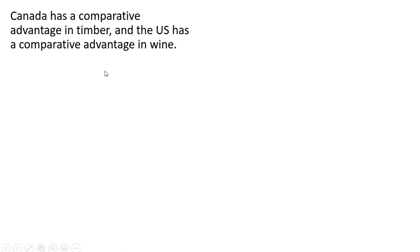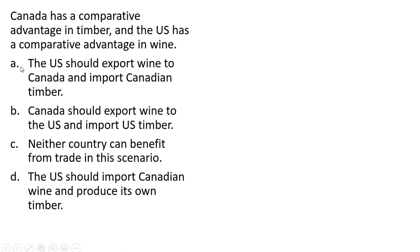Canada has a comparative advantage in timber and the US has a comparative advantage in wine. The correct answer choice is A: you should export the good you have a comparative advantage in. So the US has a comparative advantage in wine and should export wine to Canada, then import Canadian timber, since Canada has a comparative advantage in timber. The rest of the answer choices are incorrect.